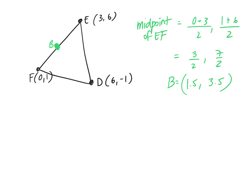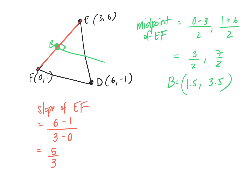That's the midpoint — where it bisects — but we need the equation of the perpendicular line there. So next step: find the slope of EF. That's (y₂ − y₁)/(x₂ − x₁) = (6 − 1)/(3 − 0) = 5/3. If the slope of EF is 5/3, the slope of the perpendicular bisector must be −3/5.